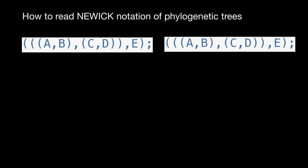Hello and welcome to Nikolai's genetics lessons. Today we are going to talk about how to read Newick notation of phylogenetic trees. This type of notation is recognizable by computers, so using this code, computers may build a phylogenetic tree. Sometimes we also use this type of notation in scientific papers in order to save space, so scientists looking at this notation would be able to tell what kind of phylogenetic tree it is.